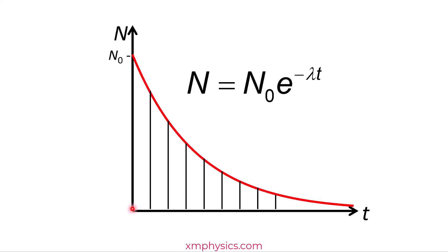For example, if it takes this amount of time for 10% of the population to decay, then in the next interval of time, another 10% of what's remaining in the population will decay. Meaning if it decreases from N0 to 90% of N0 here, then here will be 90% of 90% of N0.